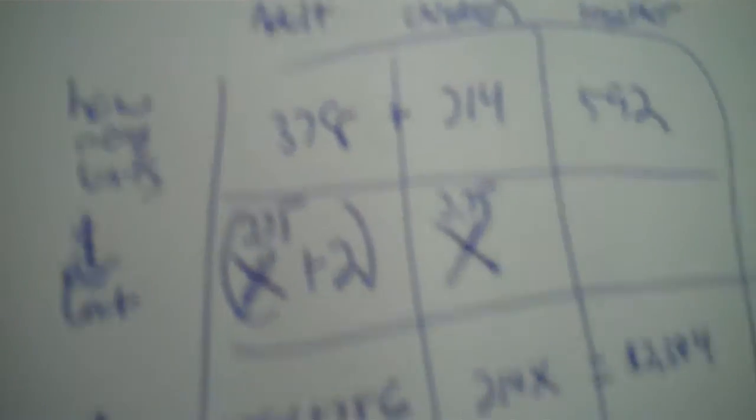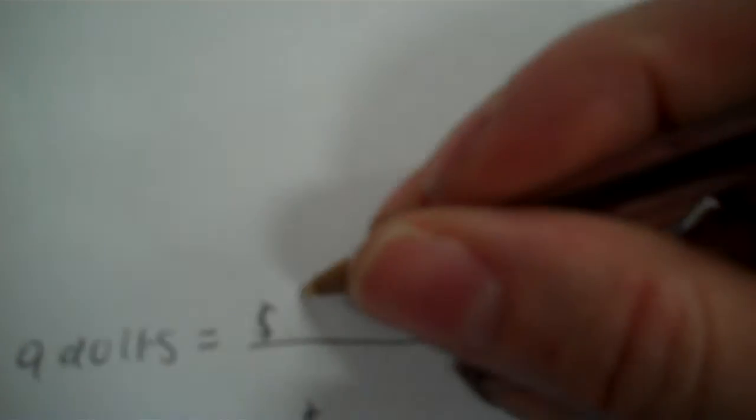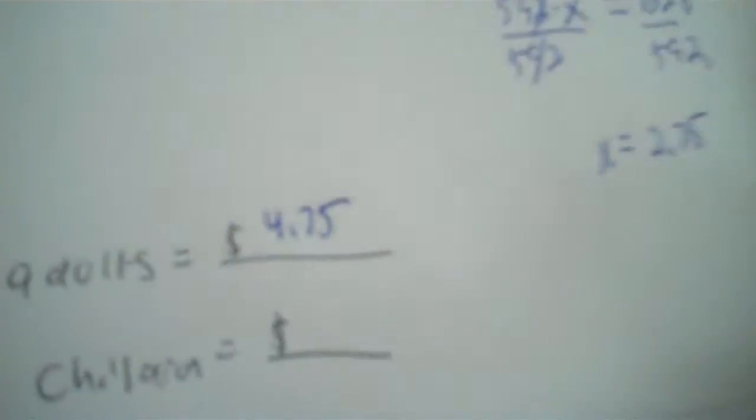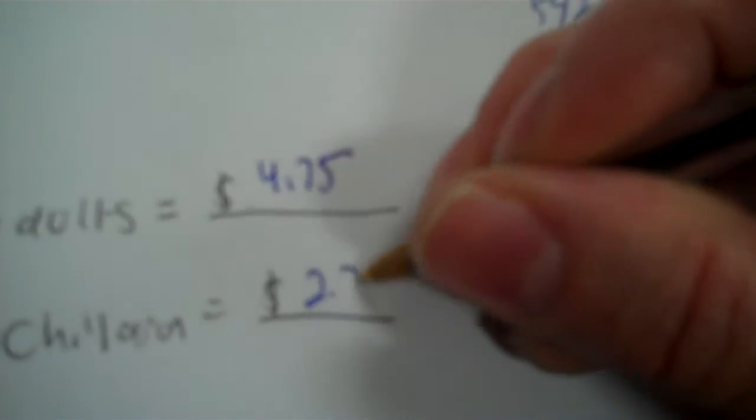That's okay if you got a decimal because you're finding money amounts. Now you go up to your X's and replace them both with 2.75. Both these unknowns. So the adults now cost 2.75 plus 2, that's 4.75. And then the children cost just the 2.75. Boom. Next problem.